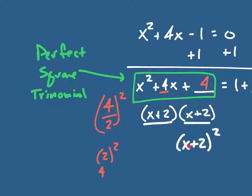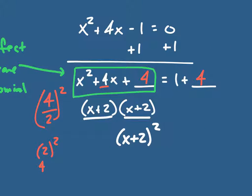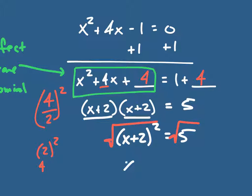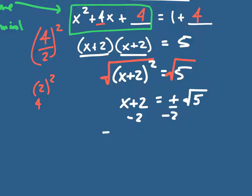Finishing out the equation, this is 5 equals 5. Now I can solve this using the square root property — this will always work. I take the square root of both sides, and x plus 2 squared becomes x plus 2. I've gone from a quadratic to a linear equation. That equals plus or minus the square root of 5, and subtracting 2 from both sides gives x equals negative 2 plus or minus the square root of 5.